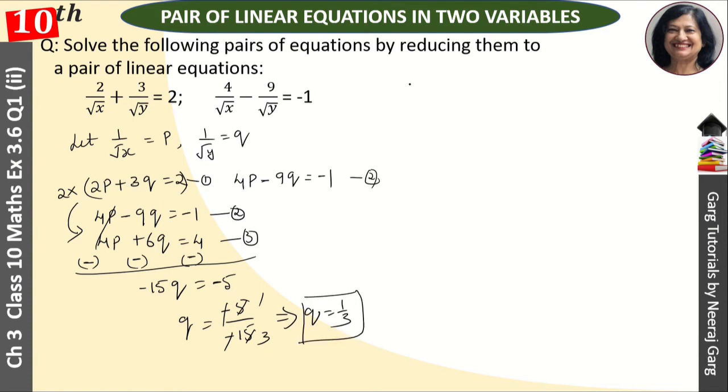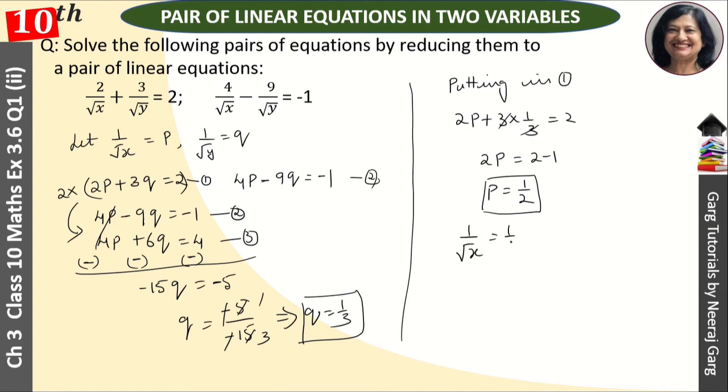This q's value is 1 upon 3. So 2p plus 3q is equal to 2. So 2p plus 3q, q's value is equal to 1 by 3. So 2p is equal to 2. Then p is equal to 1 upon 2.